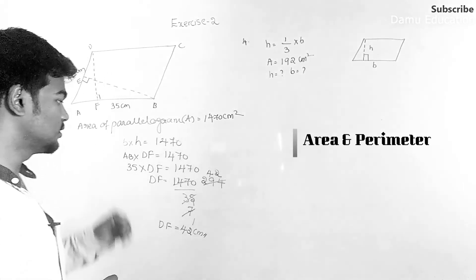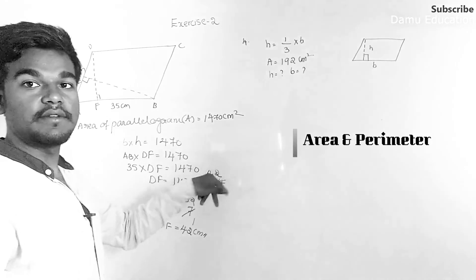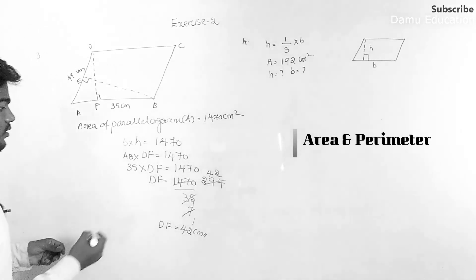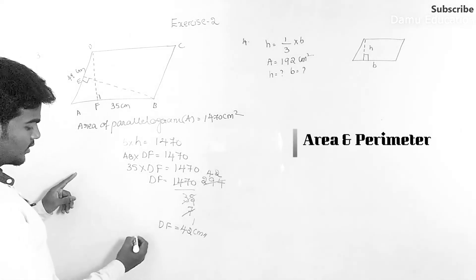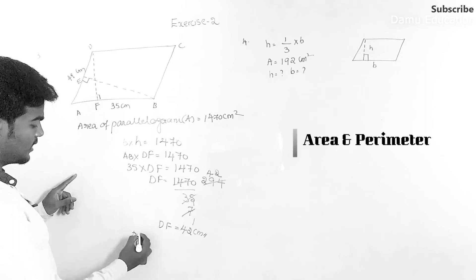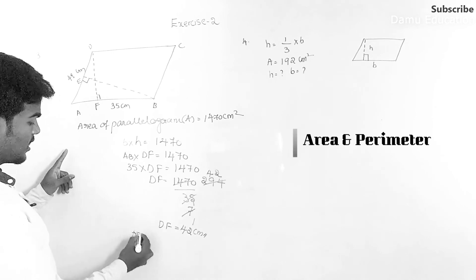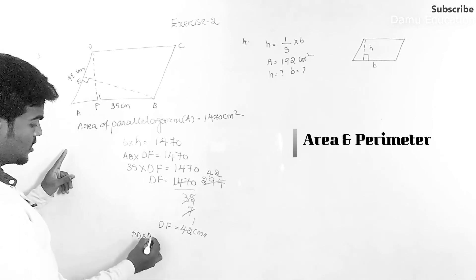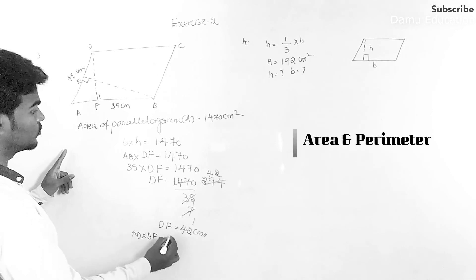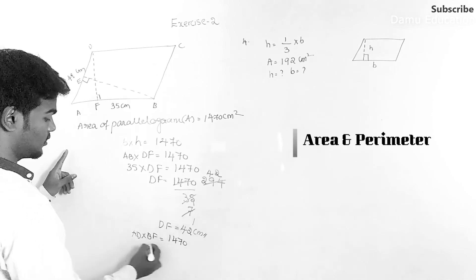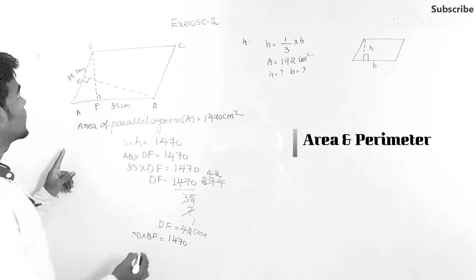Again, another one: here base will be DA, AD into height will be BE, that's 1470. So here what is that? AD that will be 49 into BE equals 1470.